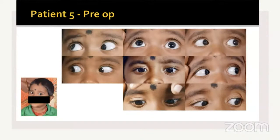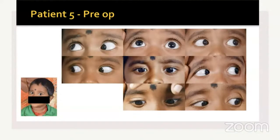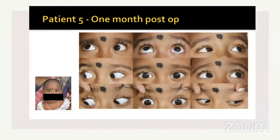For this patient, we performed the forced duction test (Guyton's test) to confirm Brown syndrome, then gave 1 ml of 4 mg betamethasone into the intratrochlear area. This photograph shows very good improvement at one month post-procedure, with clear improvement of the head posture in this child.